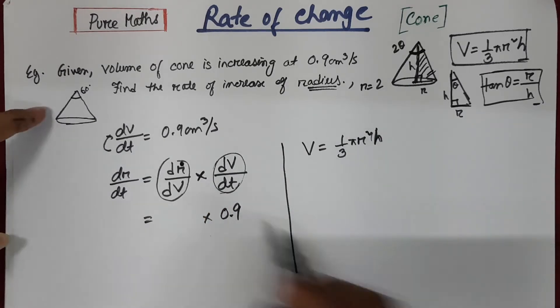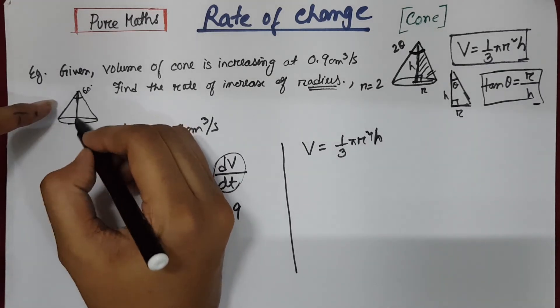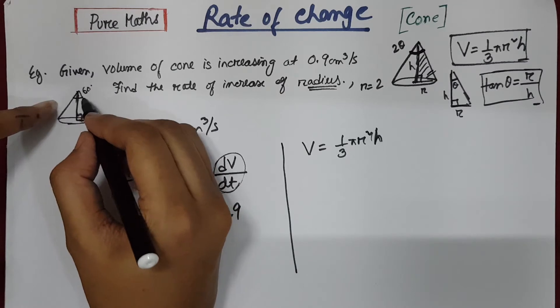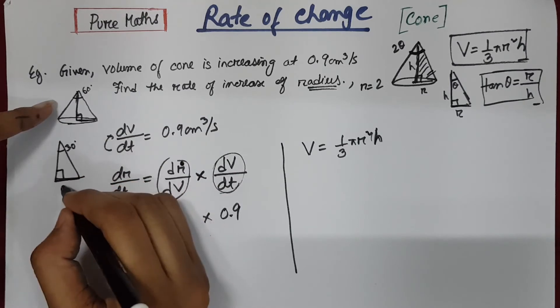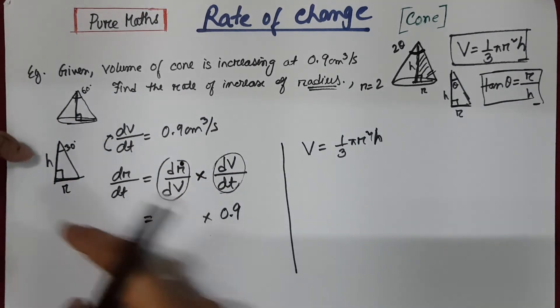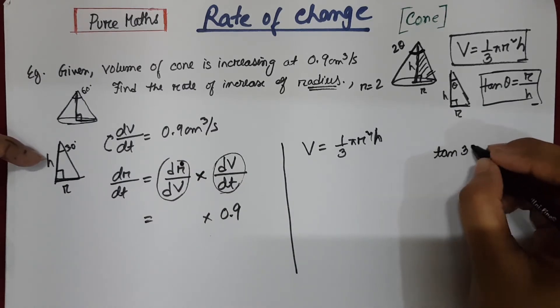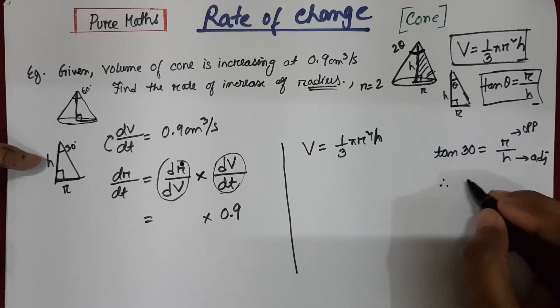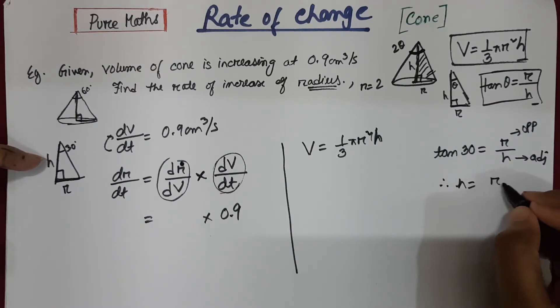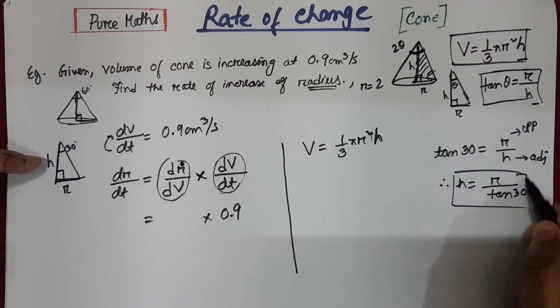So the cone had an angle of 60 degrees. If I draw a right angle triangle here, this angle will become 30. This is your 30 degree angle, this is 90 degrees, this is your radius and that's your height. So from this triangle, we can write that tan 30 equals radius by height, that is opposite by adjacent side. So from here we find that h equals r by tan 30.